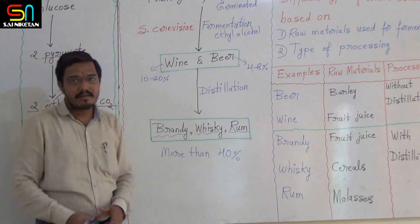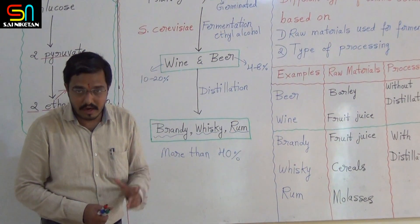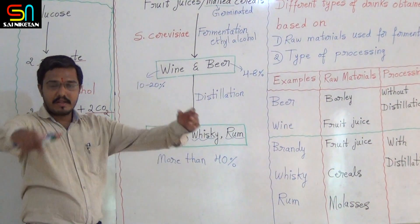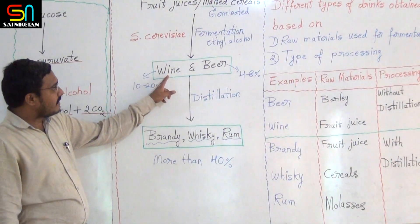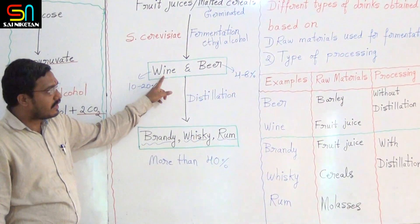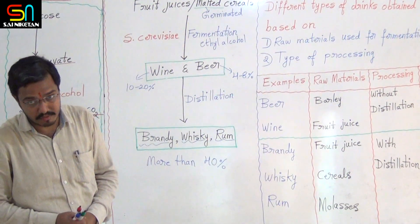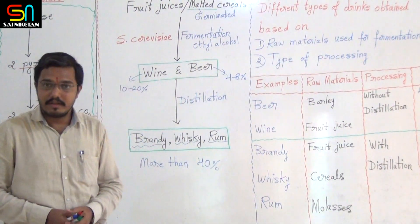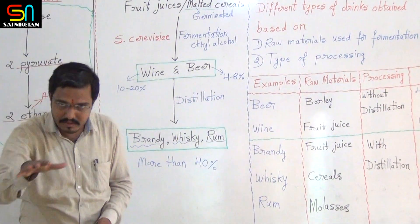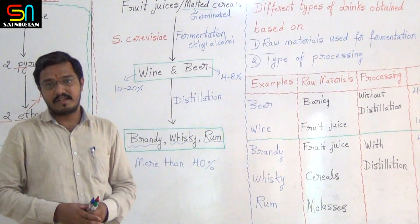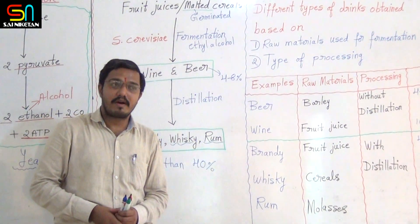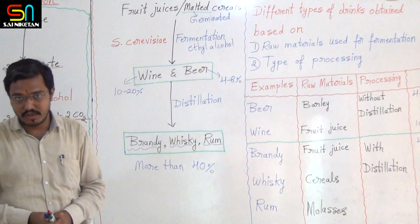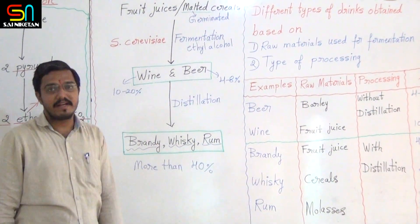Wine and beer are undistilled alcohols because they are produced directly by fermentation. If you go to a wine industry or beer industry, you can see fermenters. In a brandy, whiskey, or rum industry, they have both fermenters and distilleries. Distilleries are used for the distillation process.